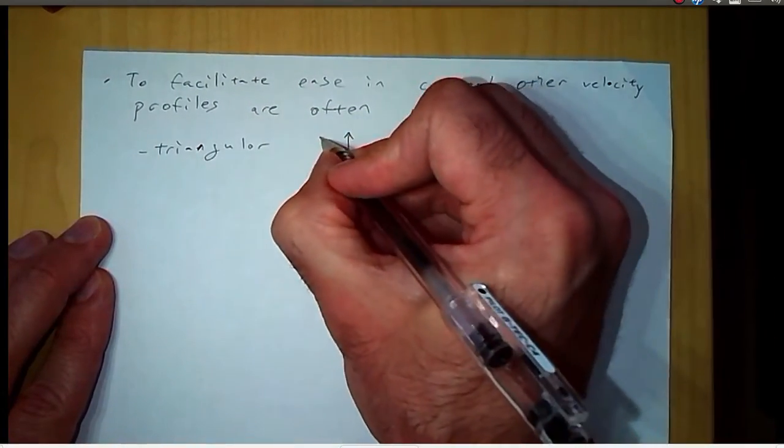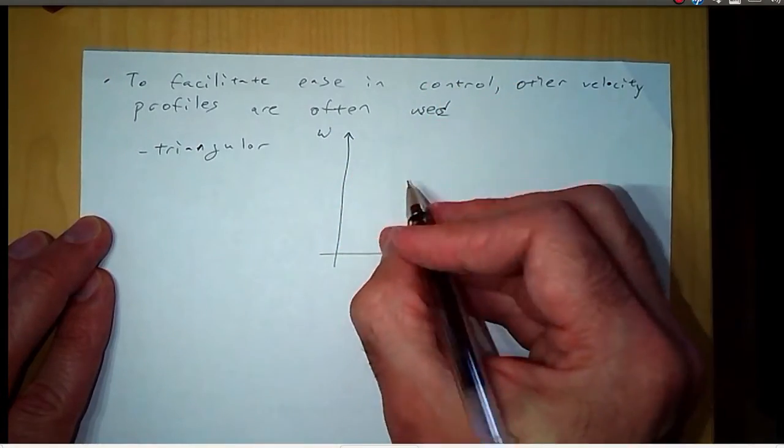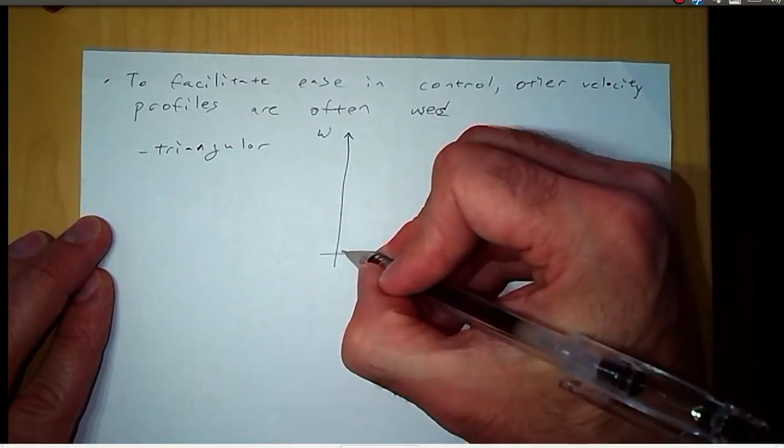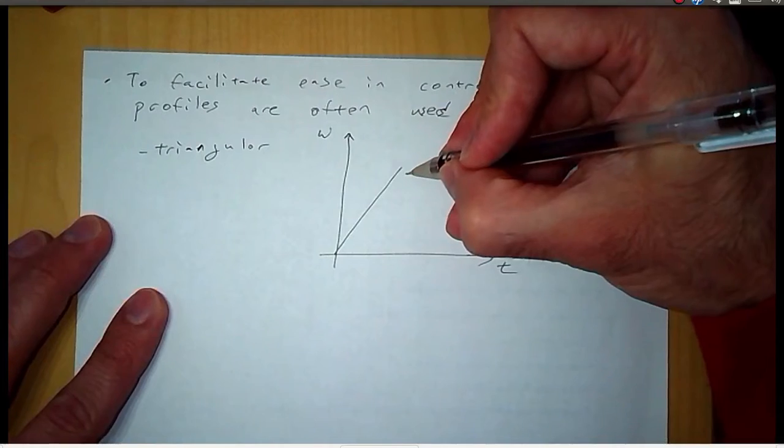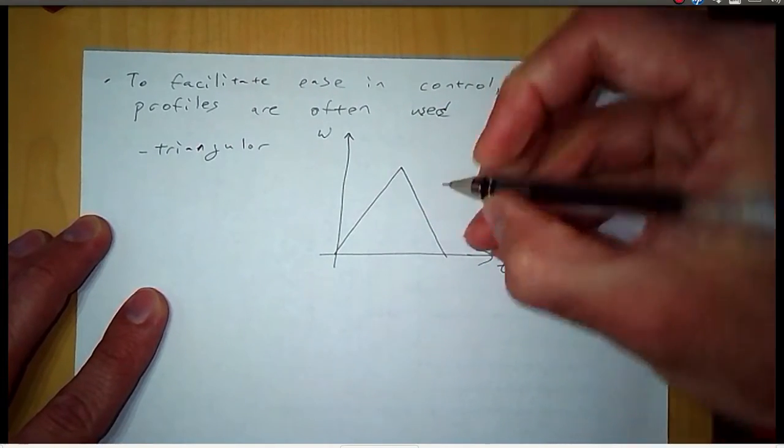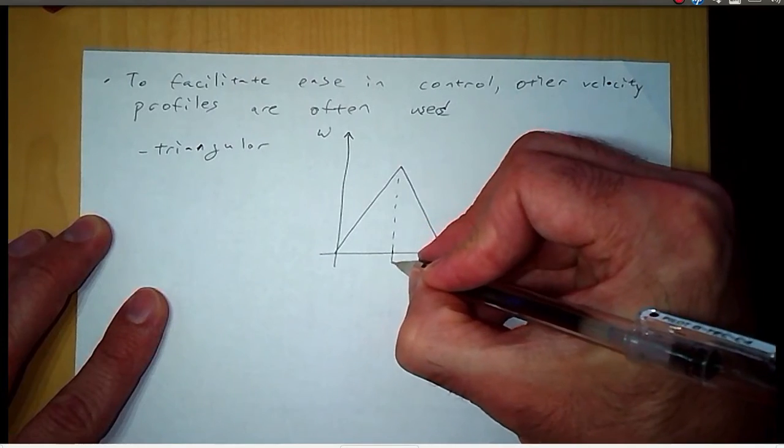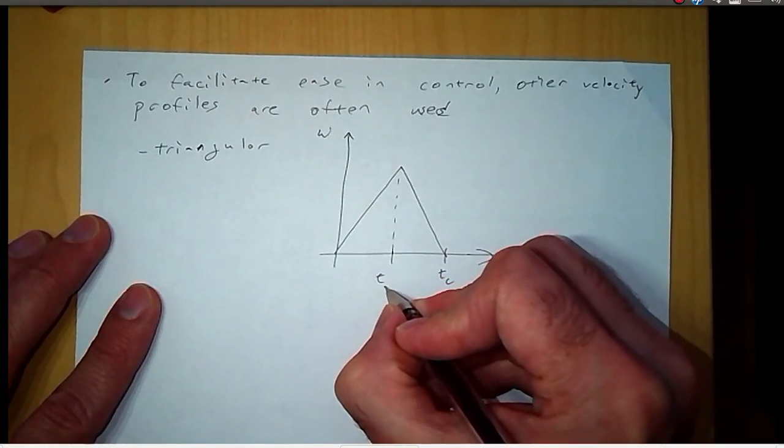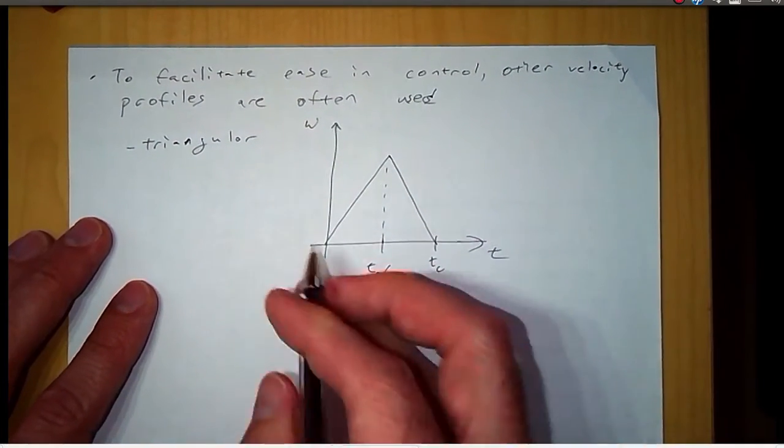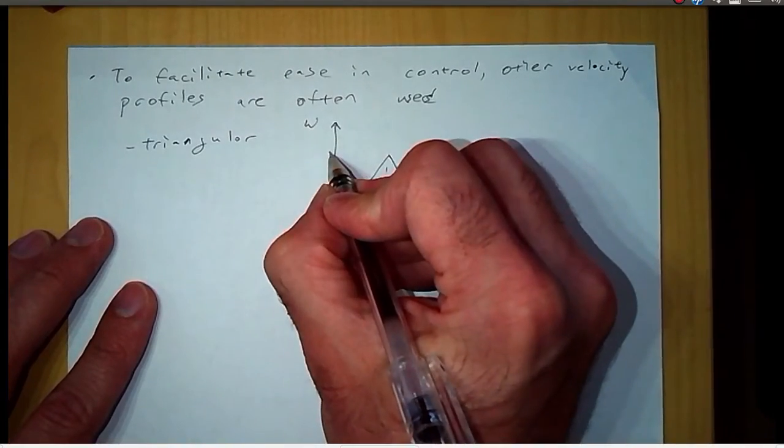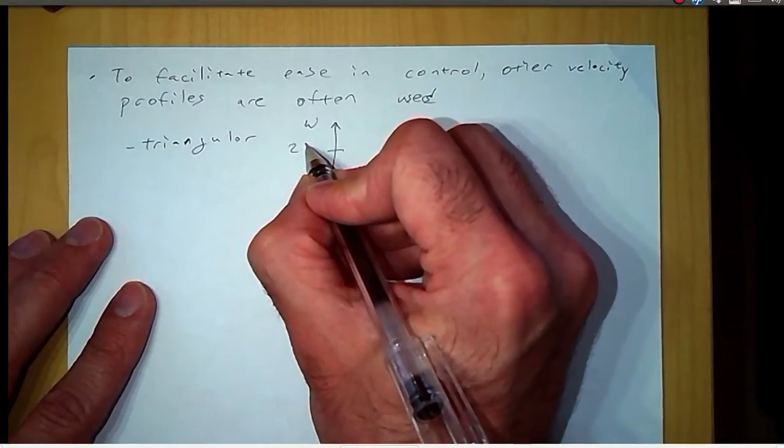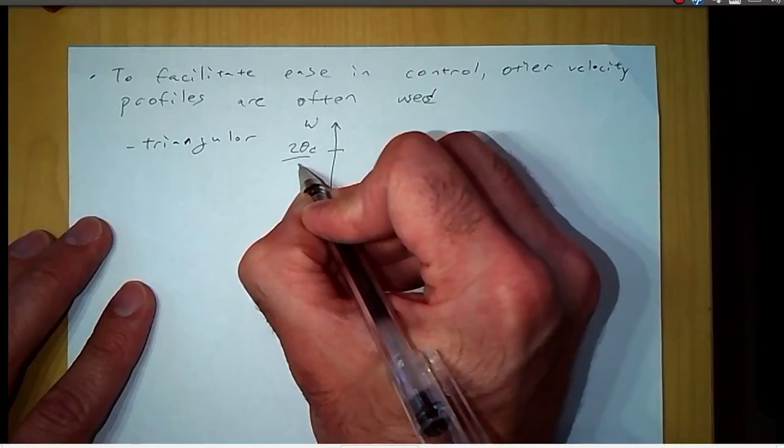And here's what that looks like. We've got time and angular velocity of the motor. So we'll start at zero, increase to some maximum speed, and then go back down to zero at T sub C. And this is T C over two. So this is symmetrical.